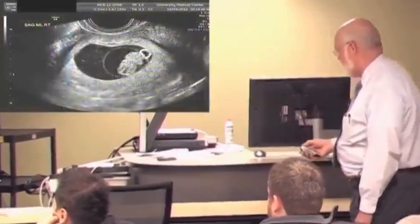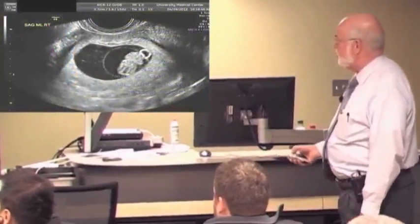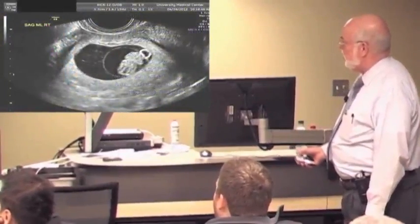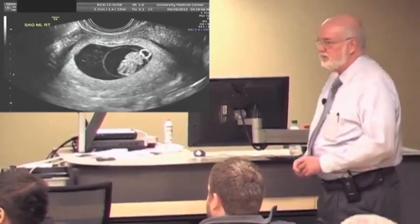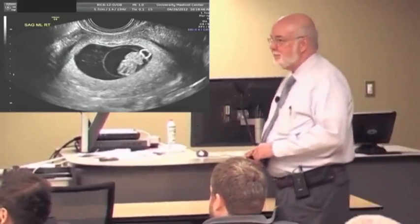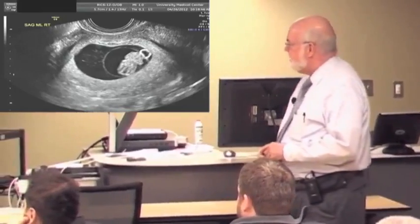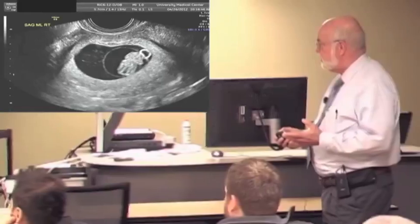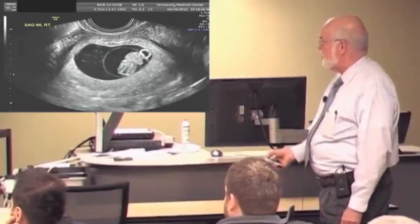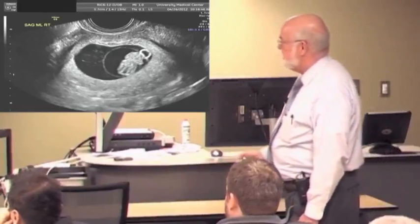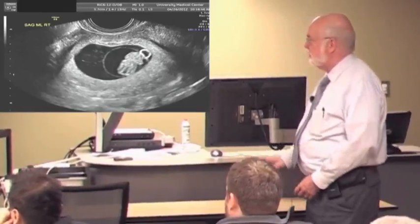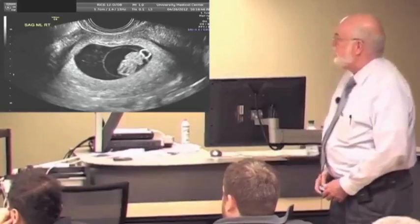So going back to that example that we used at the beginning with our early pregnancy and the fetus, what kind of a reflector do we have here in the yolk sac? Is that specular or diffuse? Yeah, it's specular. It's a smooth surface, and you can see we get a lot of energy returning, and it shows up as a very bright structure. And then the fetus itself, well, more of a diffuse reflector, as is the placenta back here.